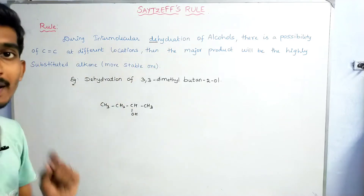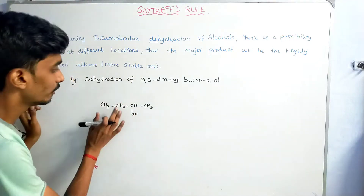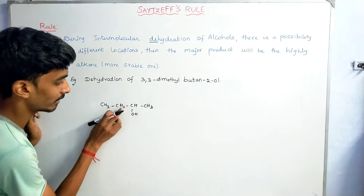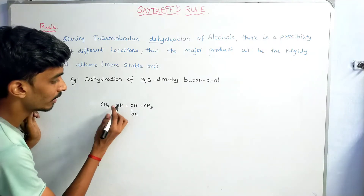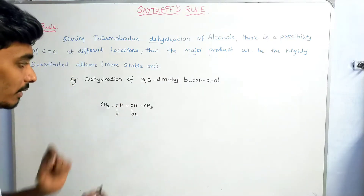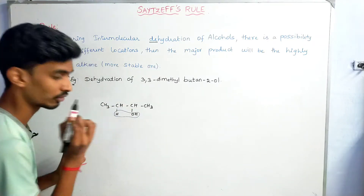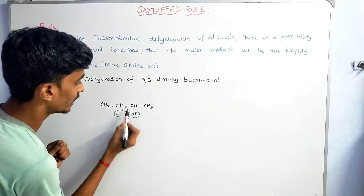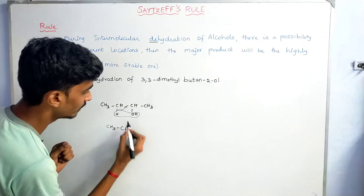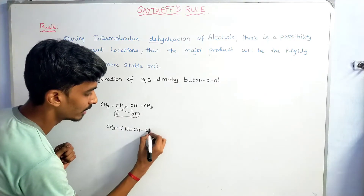In the elimination, if we remove the water molecule by looking at this bond, we get a product: CH3–CH=CH–CH3 with a double bond formed. Similarly, looking at the other adjacent bond, we get another product with the double bond at a different position.